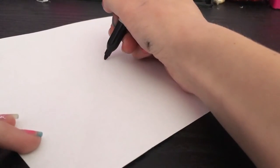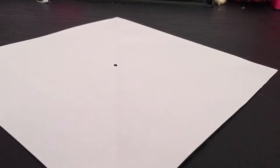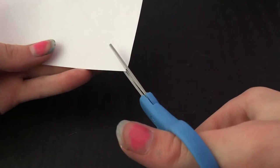So the first thing you need to do is just make a dot in the middle of your square piece of paper. Then take your scissors and cut from the corner to about an inch from the center.